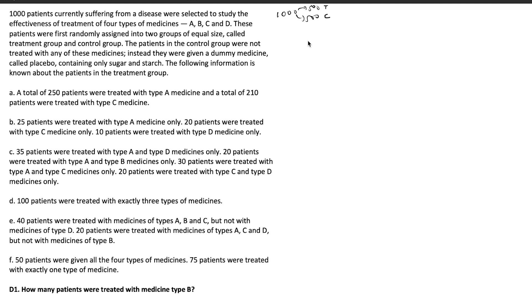Instead, the control group was given a dummy medicine called placebo containing only sugar and starch. The 500 people in the control group do not get any of medicines A, B, C, or D — only the remaining 500 in the treatment group will receive the medicines. In real world, this is exactly how you conduct a vaccine trial: you select patients, divide them into two groups, give one group placebo and the other the actual medicine or vaccine.